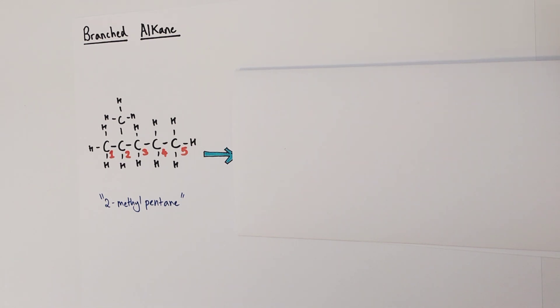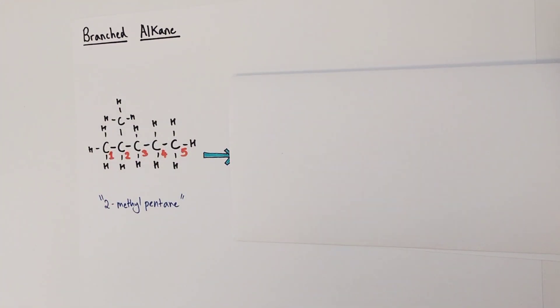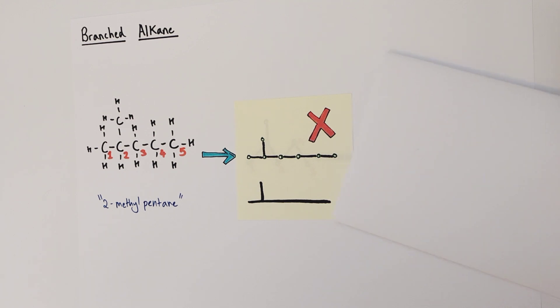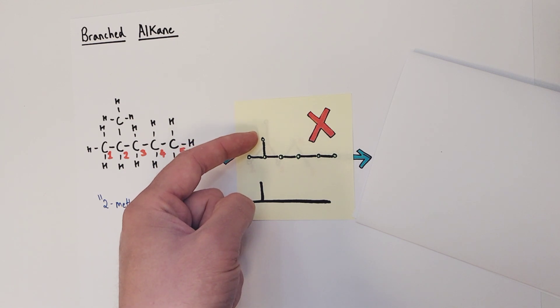We're going to now try and translate this molecule into a skeletal formula. Imagine a representation where you couldn't see any of the hydrogens and none of the carbon symbols either. Instead, intersections between two lines would represent the position of a carbon atom. The end of any drawn line would represent the position of a methyl group or CH3 group. We need to make sure we can visibly see that there are five carbons in a linear chain.